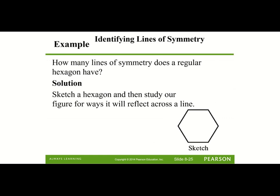Here we're looking at a regular hexagon and want to know how many lines of symmetry it has. A line of symmetry would divide it into two equal parts. One line could go straight through two vertices — folding along it gives two equal parts. Take a second to think about where other lines of symmetry might be, and we'll look at all of them in the next slide.